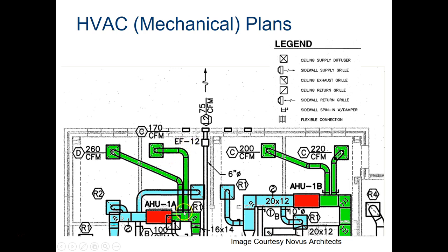The green are the supply ducts, the red is the air handling unit, and the blue are the returns — R1, R2, R1 — different styles of returns in those rooms, with dimensions like 20 by 12 indicating the duct size for that return. This is the air handling portion covering the heating and cooling of each room. Based on the information here, this appears to be a heating and cooling system with a single air handling unit covering both supply and return in each room.